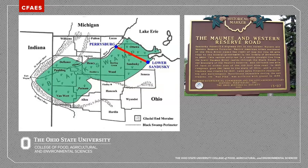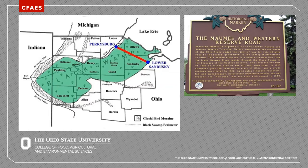Ohio used to look quite different than today. Some estimates say the state was previously covered by up to 95 percent forests, and throughout the 1800s those forests were cut down to sell timber and make way for new agricultural land. Early American settlers expanded further into northwest Ohio through the mid-1800s, but their progress slowed when they encountered the Great Black Swamp — a low-lying, poorly drained land remnant of the region's glacial history. Settlers devised a plan to construct a road through the swamp to allow travel from Fremont to the Maumee River area in Perrysburg, and construction of the Maumee and Western Reserve Road led to the draining of the first sections of the Black Swamp.